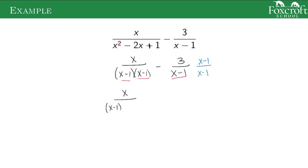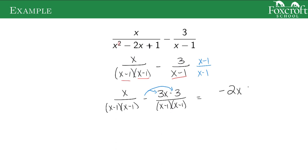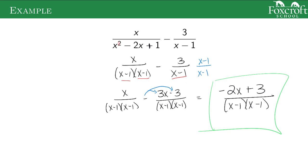The left-hand fraction doesn't need to change at all. The right-hand fraction: I have to distribute on top, giving 3x minus 3. On the bottom keep them separate. Now combining, and since we're subtracting, the negative sign distributes to everything in the right-hand fraction. So I get x minus 3x which is negative 2x, and minus negative 3 is plus 3. There's no factoring I can do to cancel anything out, so this is our final answer. The only thing this example added was that by thinking ahead, you can multiply by less and save yourself time.